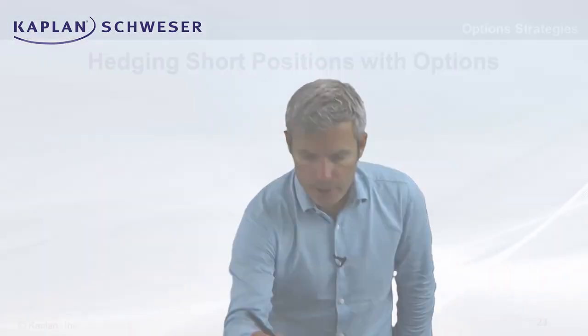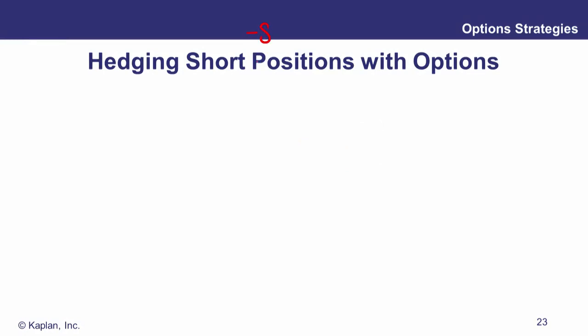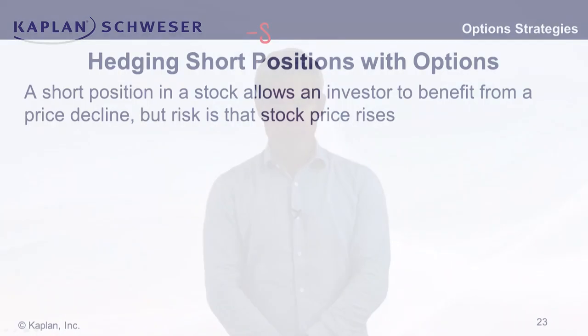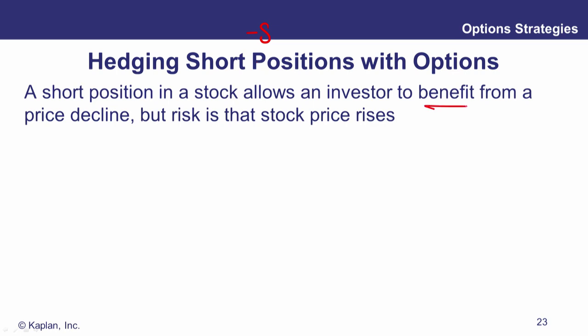We're looking at hedging a short position in the underlying using options. A short position in the underlying is a bearish position. When you short sell something, you borrow it, sell it with the intention of buying it back lower later on and giving it back to the lender. You're looking to benefit from a price decline. The risk is that you end up buying the asset back higher because the stock price rises.